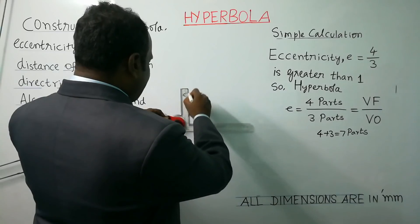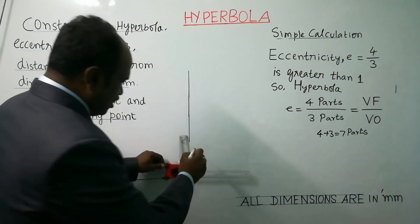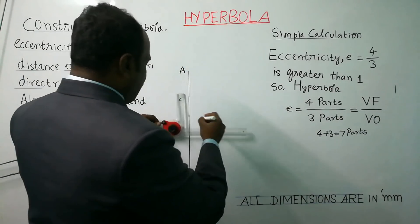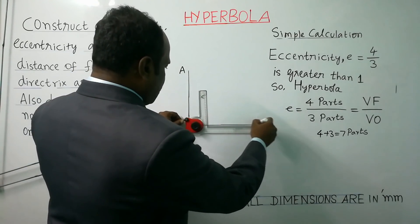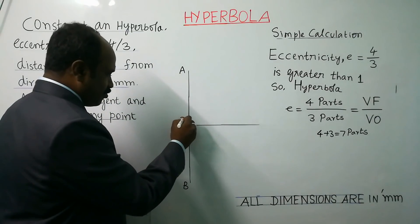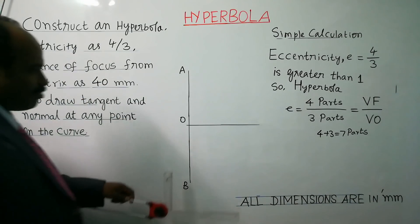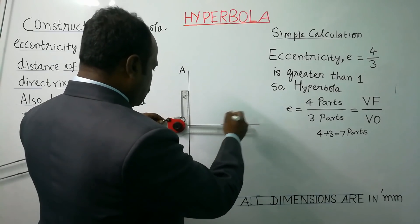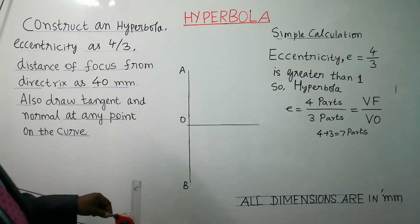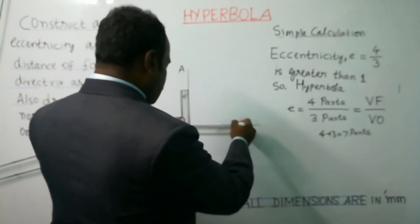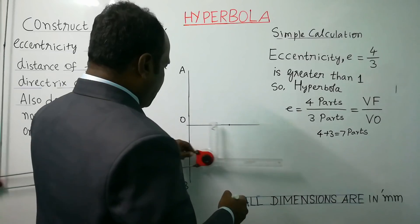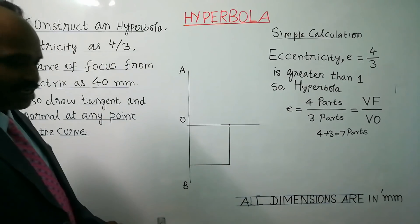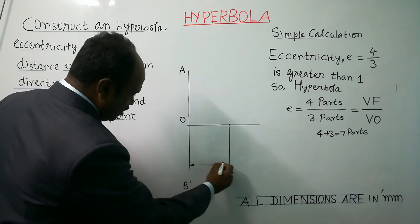As we followed for ellipse and parabola, the procedure for hyperbola is the same — only the eccentricity value differs. Draw a fixed vertical line called the directrix using an H pencil and the vertical scale of the drafter. The distance of focus from the directrix is given as 40 mm, so locate the focus point at 40 mm, which is 4 cm. Dimension that with a linear line, arrows on both ends, and write 40 using an HB pencil.